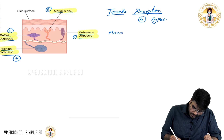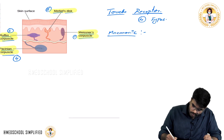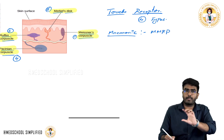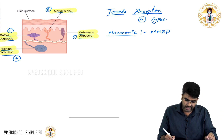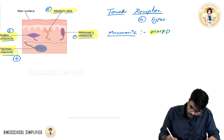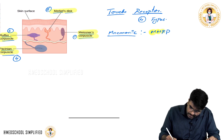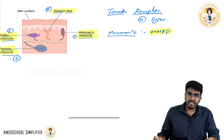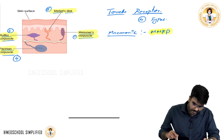The easiest way to remember these corpuscles is by using a mnemonic: MMRP, just like MRP — maximum retail price. So remember it as MMRP: Meissner's, Merkel's, Ruffini's, and Pacinian corpuscles.